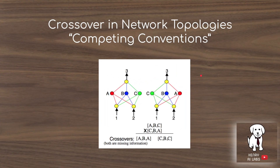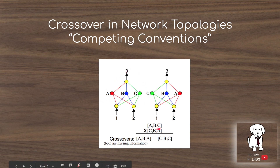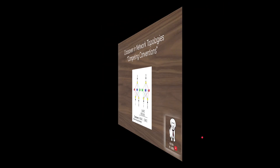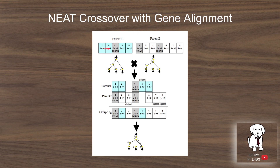Crossover of network topologies is a challenging problem because of competing conventions — there are many different ways to encode the same function in neural networks. Both networks may compute the same combination of A, B, and C even though they're ordered differently, and their genotypes might be represented differently. A naive crossover could result in missing information from the parent networks. The solution is to use historical markings to perform an alignment, similar to how biological crossover aligns genes sharing the same trait, like alleles.